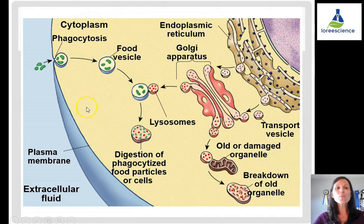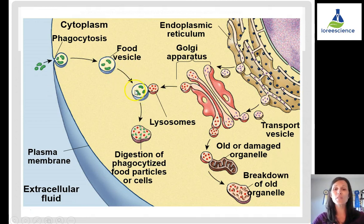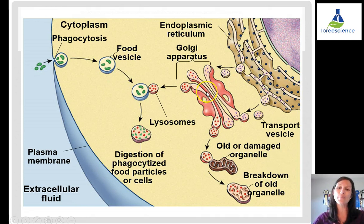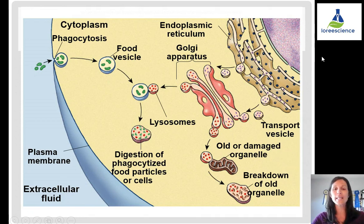All of these organelles work together to keep our cells alive — no organelle can do it on its own. We have the interaction of vesicles and lysosomes for digestion, the ER making proteins which then get modified in the Golgi and sent out of the cell. All of these organelles interact to keep cells alive.